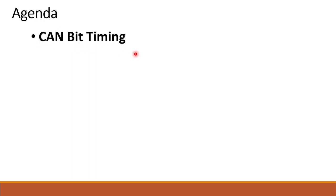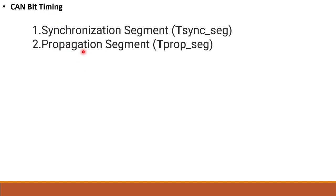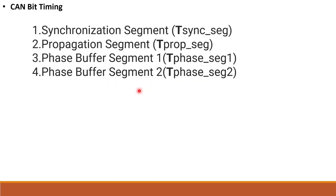CAN Bit Timing is mainly used and has four types. CAN Bit Timing is nothing but nominal bit timing. We divide the number of bits in CAN Bit Timing into four segments: the first is synchronization segment, second is propagation segment, third is phase buffer segment 1, and fourth is phase buffer segment 2.